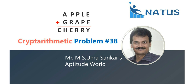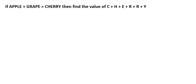Hello everyone. Welcome to Natus and AppleQued World. This is the 38th cryptarithmetic problem in the cryptarithmetic series. Apple plus grape is equal to cherry. If apple plus grape equals cherry, find the sum of the digit values of cherry.